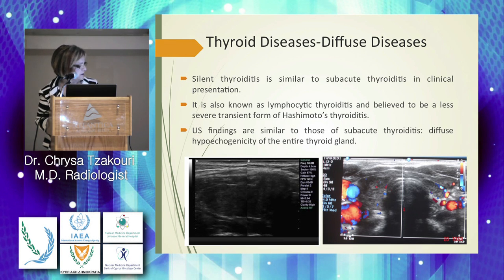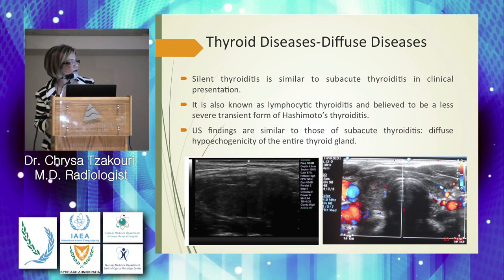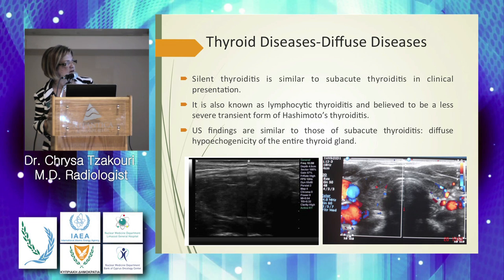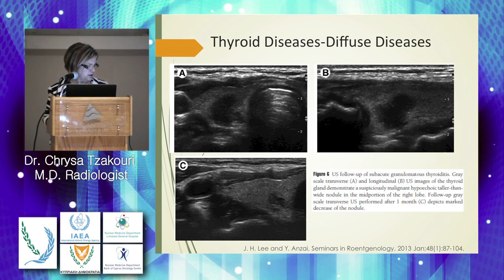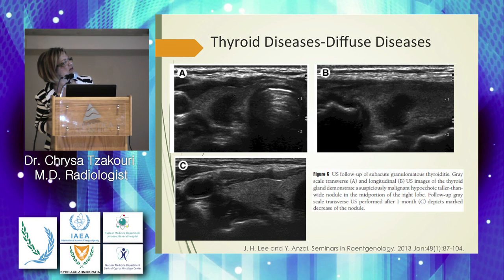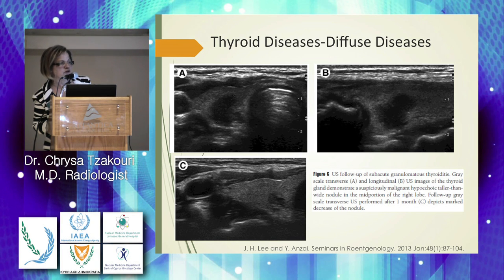On imaging, thyroiditis appears as a dark, hypoechoic region. On Doppler imaging, very low vascularization is seen within the hypoechoic areas. Another case of thyroiditis shows on transverse grayscale imaging a local hypoechoic lesion in the thyroid, confirmed as hypoechoic on longitudinal imaging. On one-month follow-up study, the lesion was reduced, confirming the diagnosis of thyroiditis.